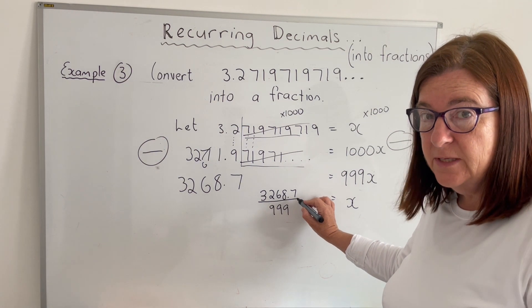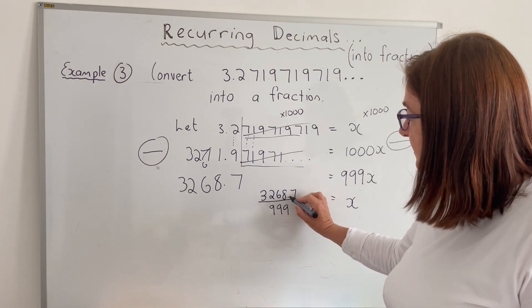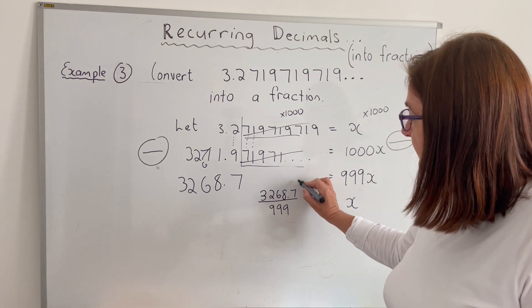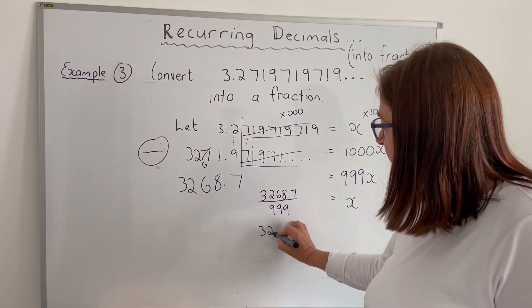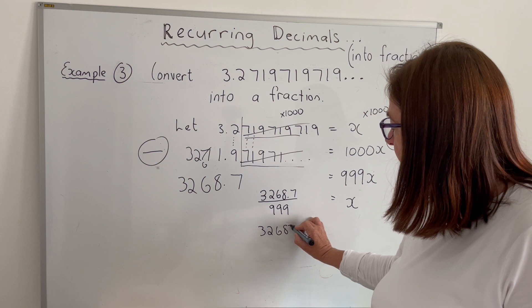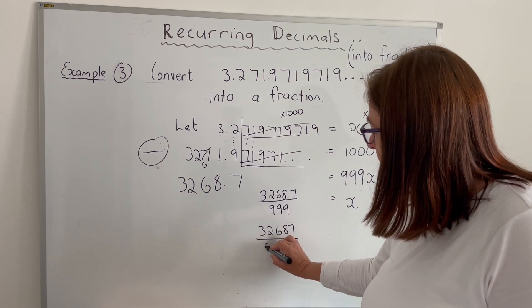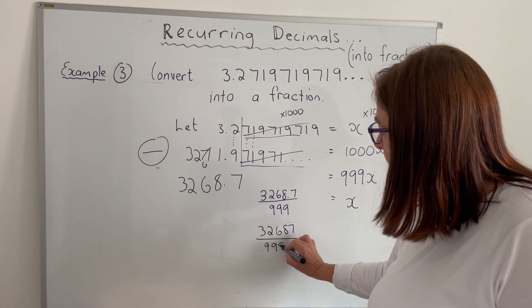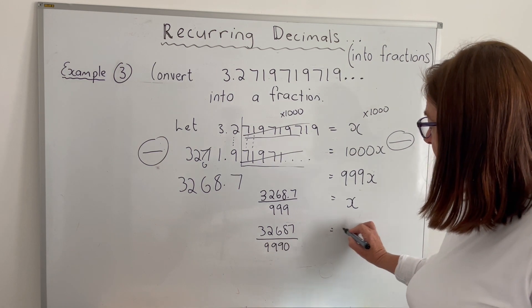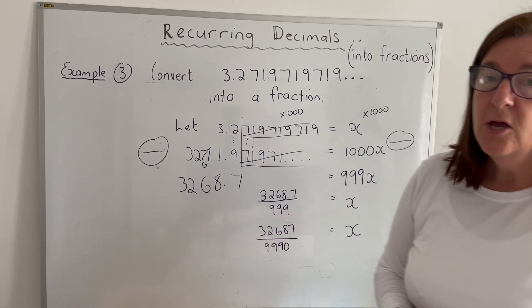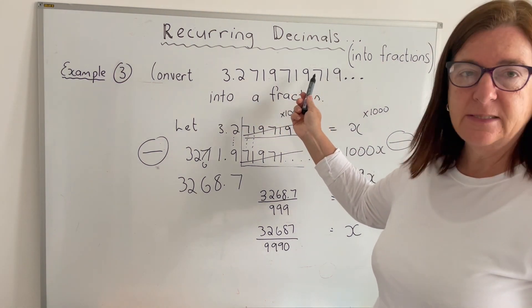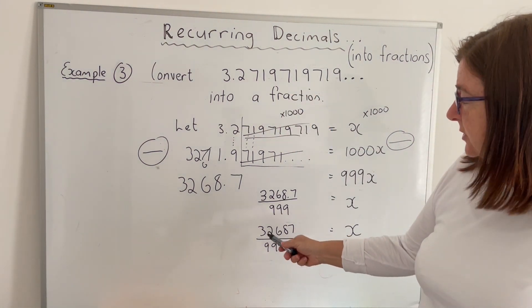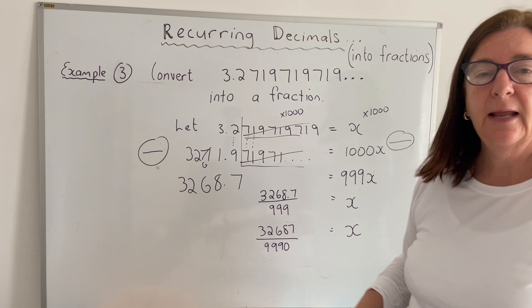Not in its simplest form. We've still got a decimal, so we need to get rid of that 0.7. So I just times the top by 10 and the bottom by 10. So my final answer is going to be 32687 over 9990. Because remember, I've multiplied it by 10.